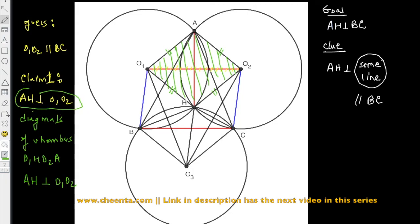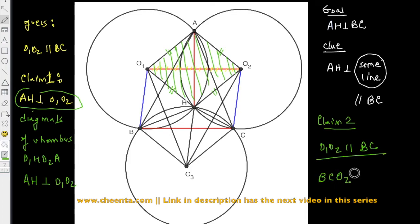Claim 2: O1O2 is parallel to BC. If we can show that BCO2O1 is a parallelogram, then we are done, because the opposite sides of the parallelogram — O1O2 and BC — would be parallel, and that would prove the claim. So the question to you, the viewer: can you show that BCO1O2 is a parallelogram?